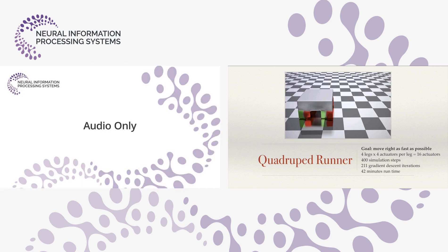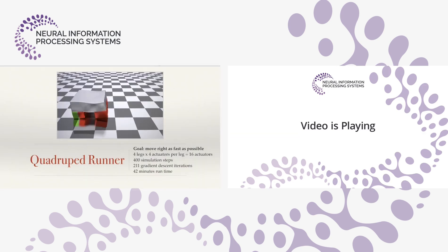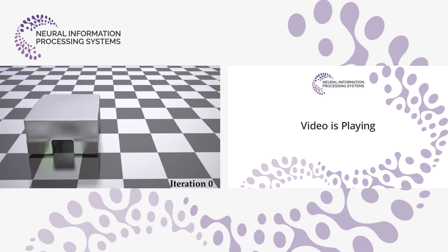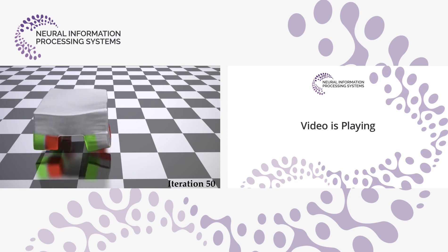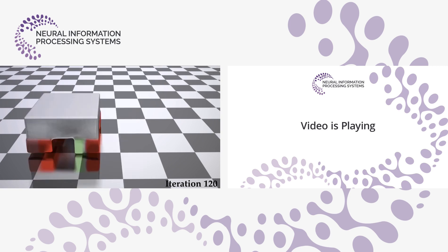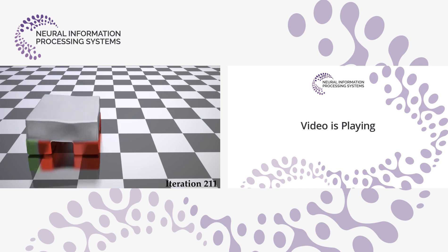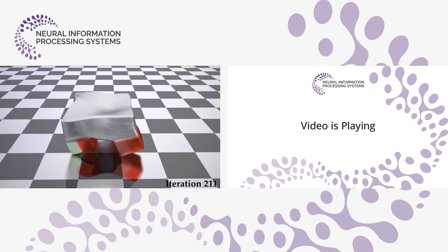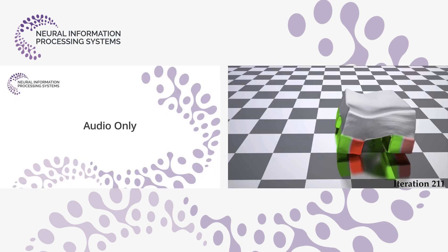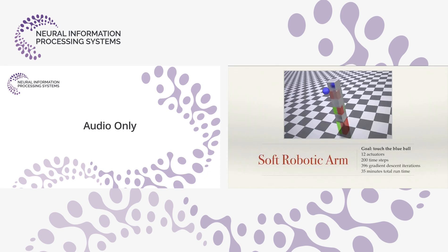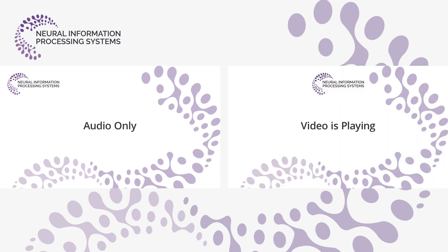This is a very efficient learning process compared to reinforcement learning. Here's a 3D quadruped runner with four legs and 16 actuators. At zero iterations it makes no progress; at 50 iterations it starts to behave well; at 120 and 200 iterations this cute robot is jumping to the right — all just from brute-force gradient descent.